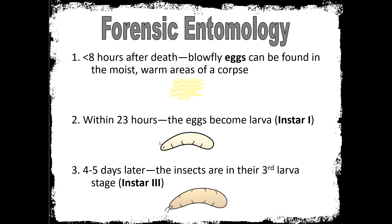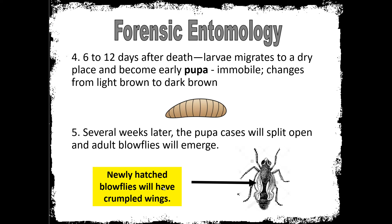Within 24 to 48 hours, the first instar larvae will molt into the second stage maggot, instar two. Another 24 to 48 hours later, they molt into their final stage, instar three. These instar three maggots are going to feed for about three to four days in warmer environments, though it would take longer if temperature or humidity were decreased. We generally say anywhere from three to 12 days after death the maggots will feed.